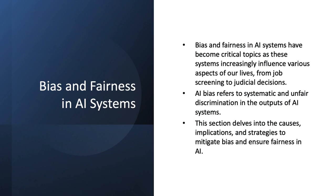Bias and fairness in AI systems have become critical topics as these systems increasingly influence various aspects of our lives, from job screening to new systems that are being deployed. AI bias refers to the systemic and unfair discrimination in outputs of an AI system. This section delves into the causes, implications, and strategies to mitigate bias and ensure fairness in AI.